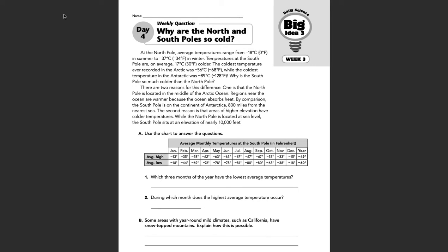Part A wants us to use the chart to answer the questions. It shows average monthly temperatures at the South Pole in Fahrenheit — average highs and average lows. Which three months of the year have the lowest average temperatures?